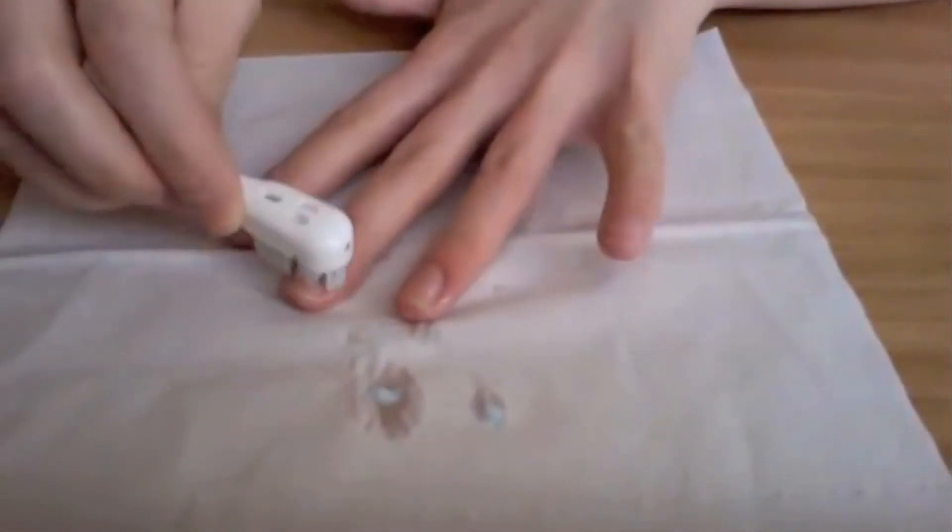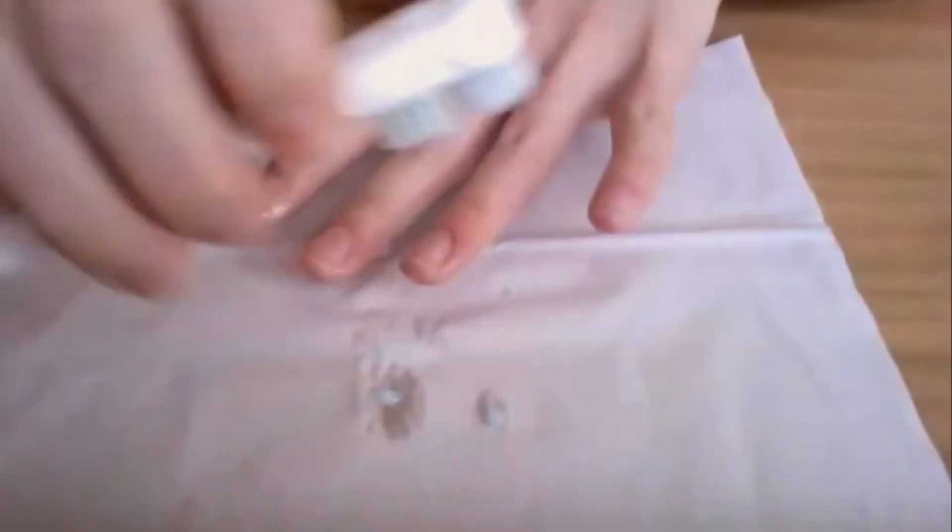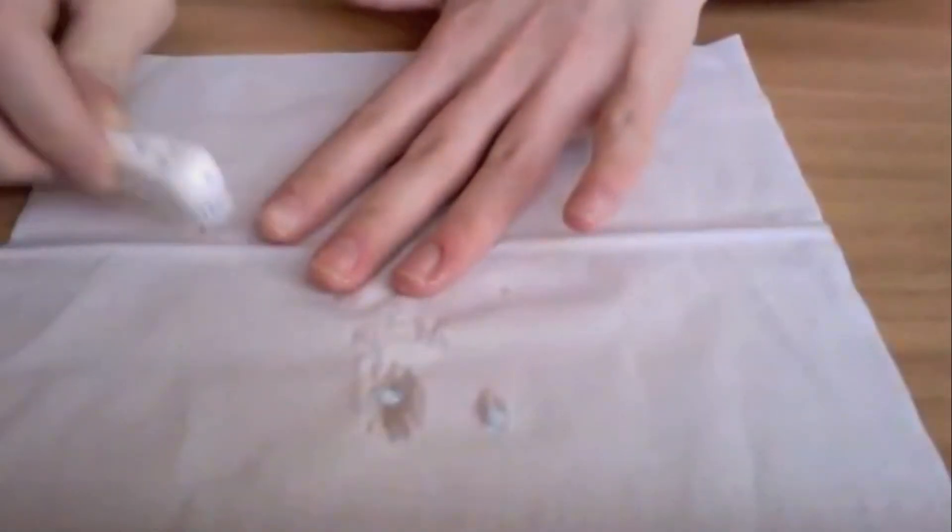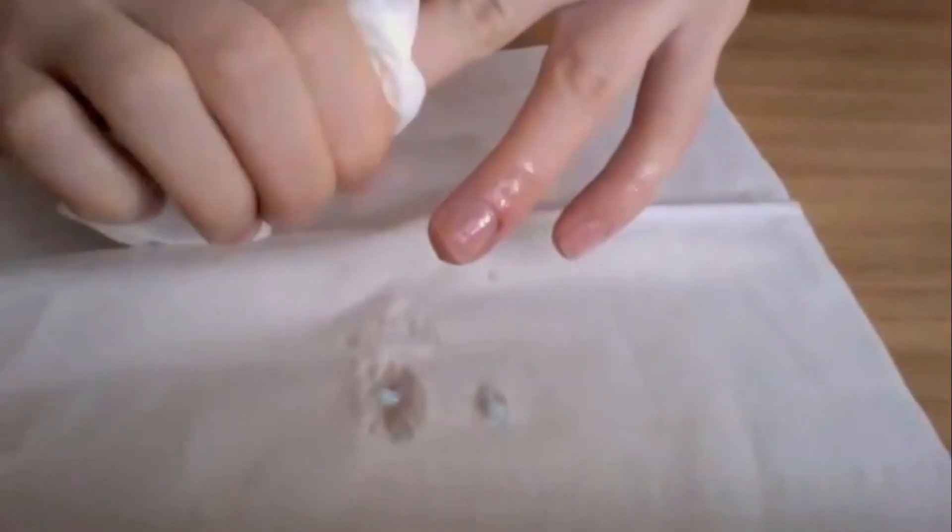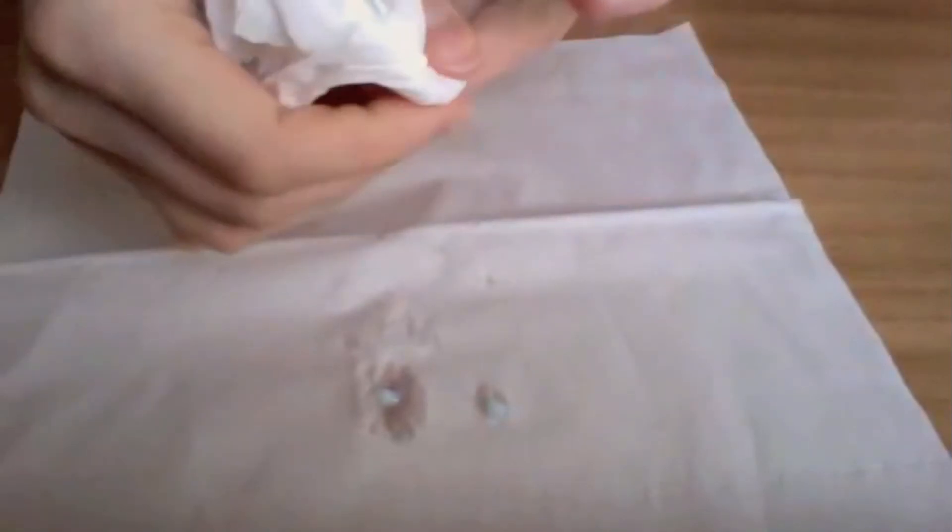The white toothpaste helps remove surface stains, while the lemon, which is a natural brightener, helps lighten the nail. After you're done scrubbing your nails, take a paper towel and wipe off.